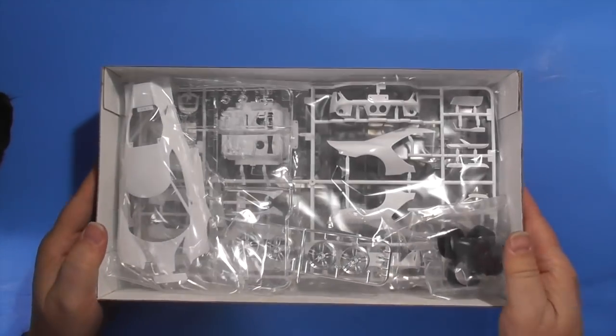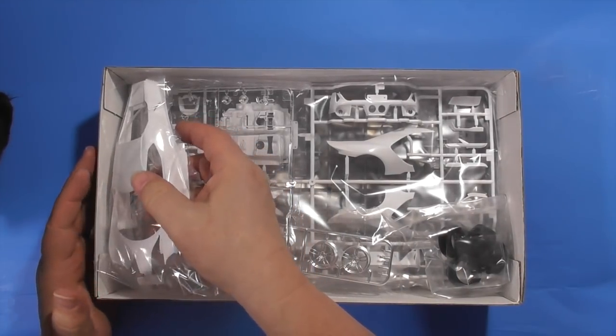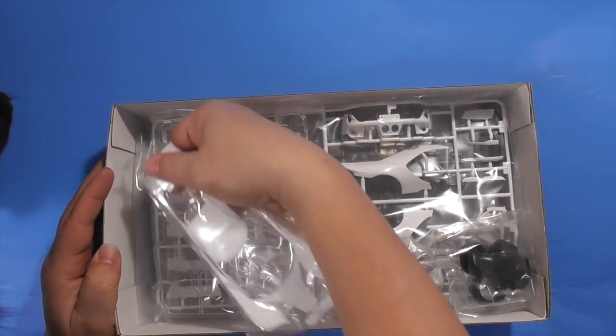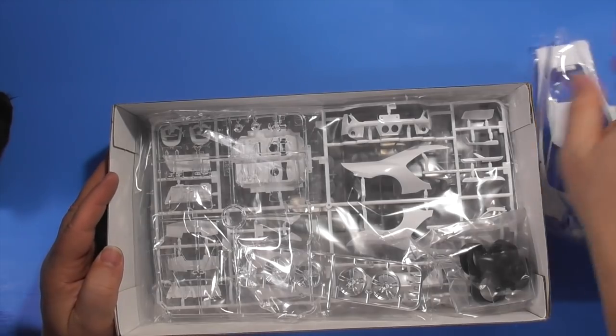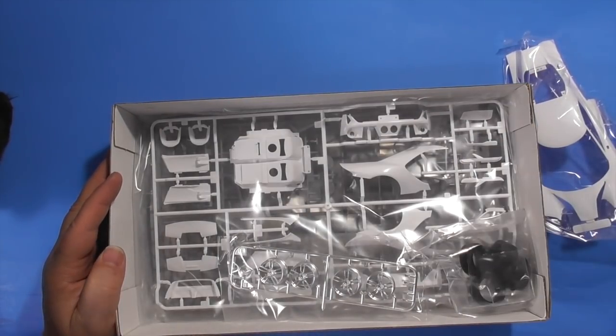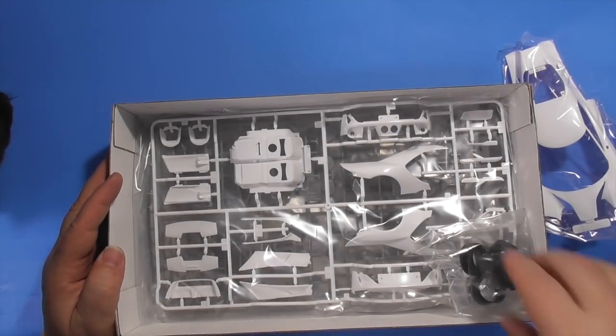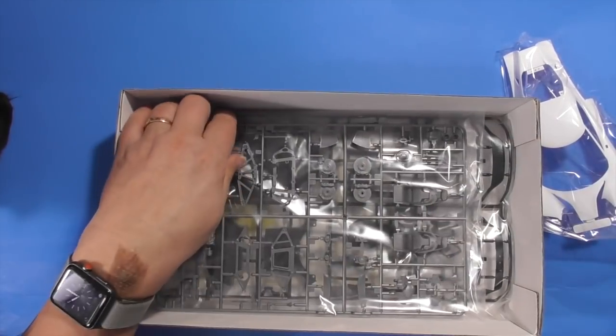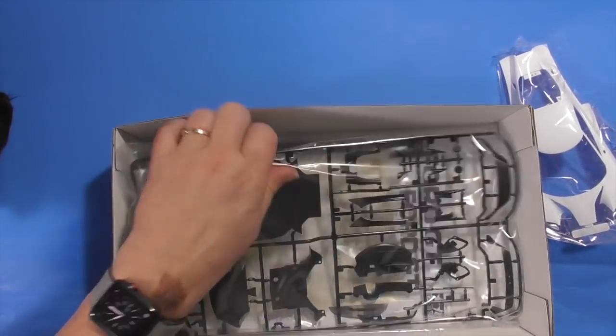This is a smaller box than I'm used to for viewing. So we've got the body stapled to the side of the box. Clear sprues, chrome, rubber wheels, one white, one gray, one black.